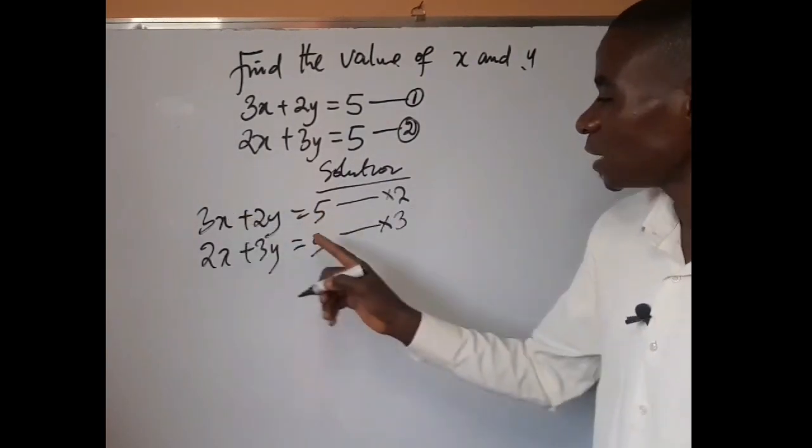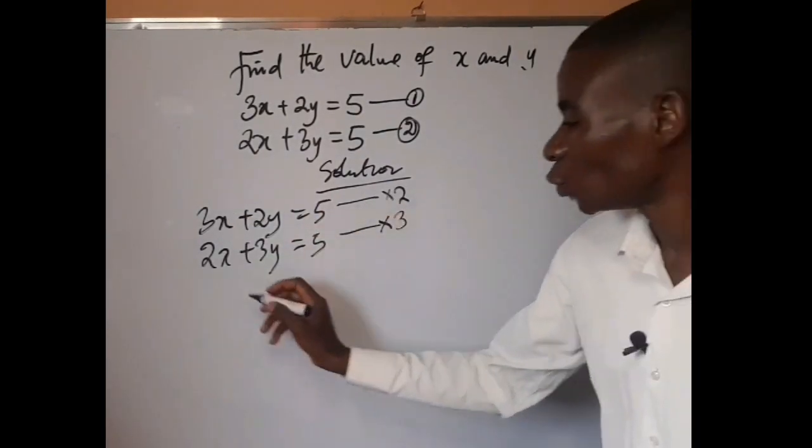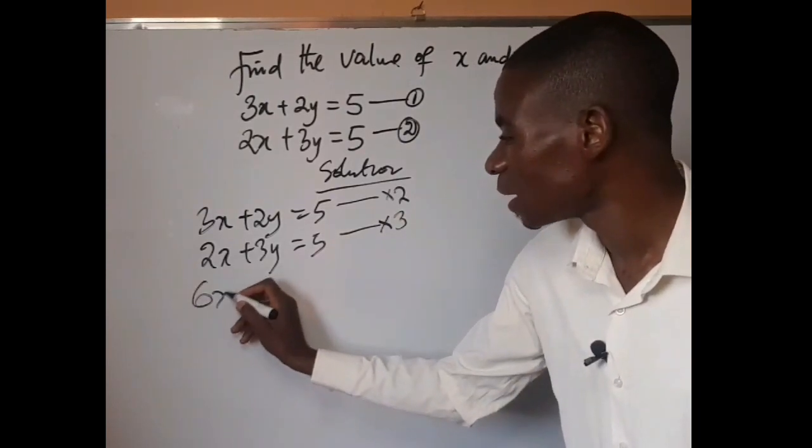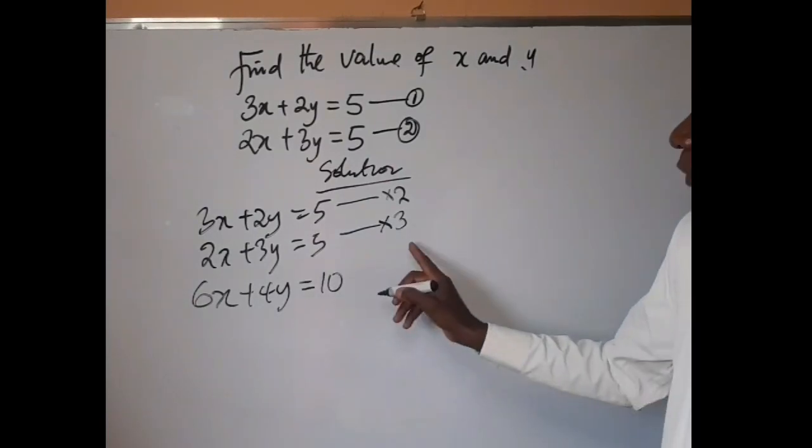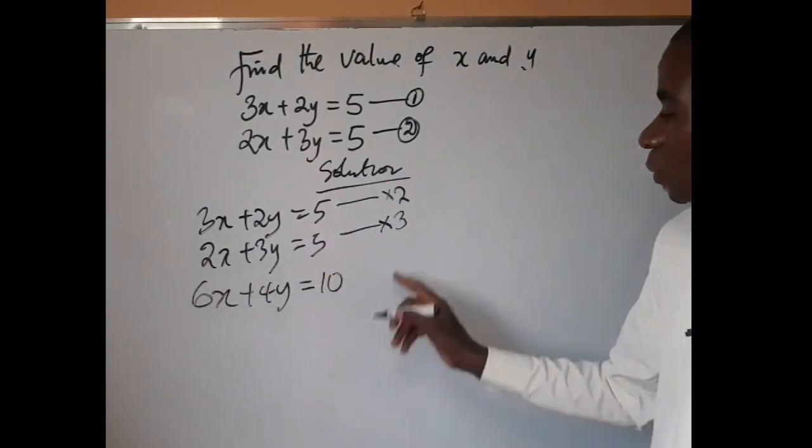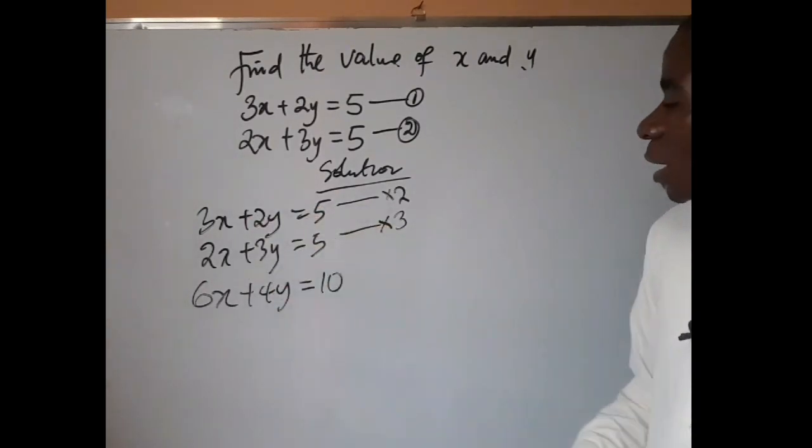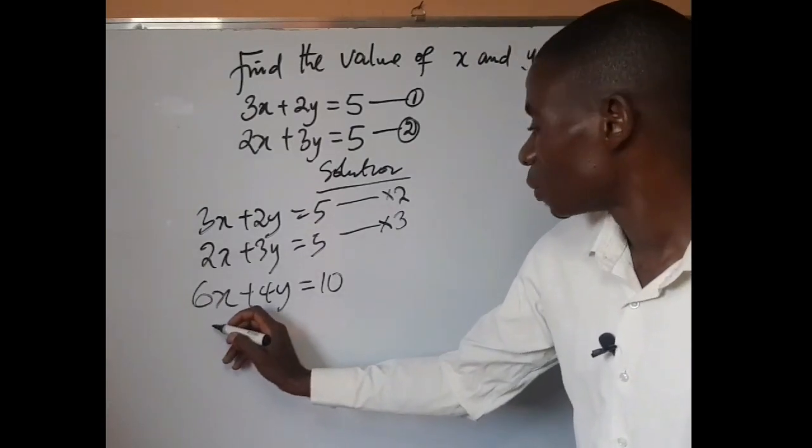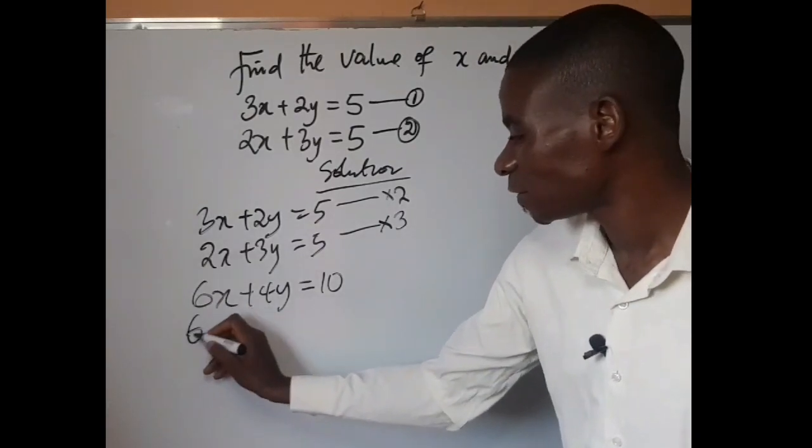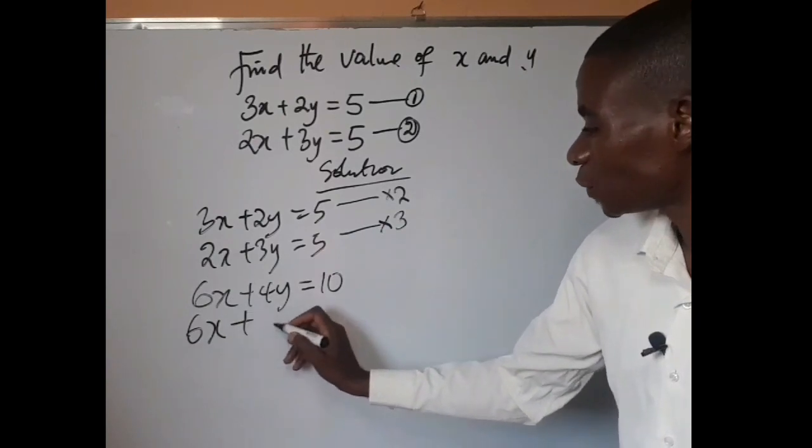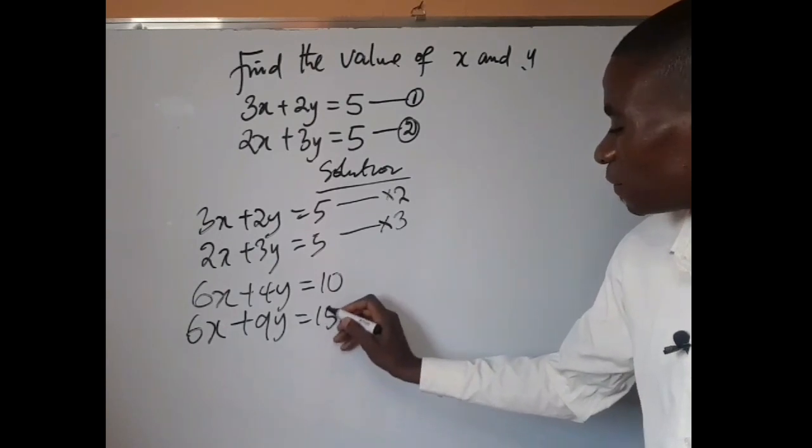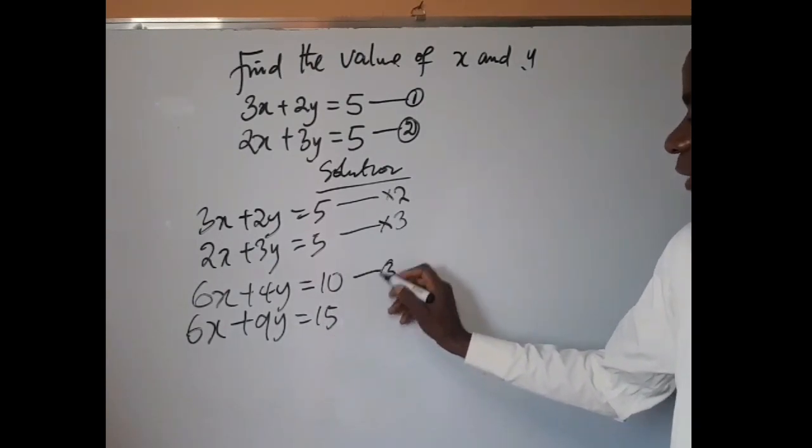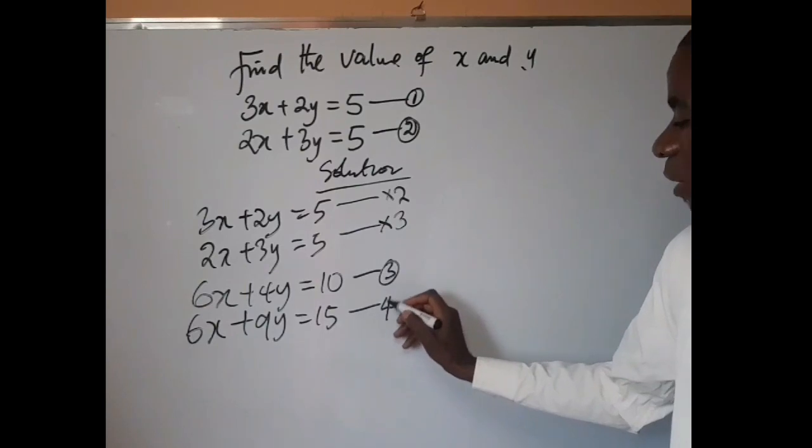Now by multiplying equation 1 by 2, we're going to have 6x plus 4y equals 10. Then by multiplying equation 2 with the coefficient of x in equation 1, we'll be having 6x plus 9y equals 15. This is now our equation 3 and this should be our equation 4.